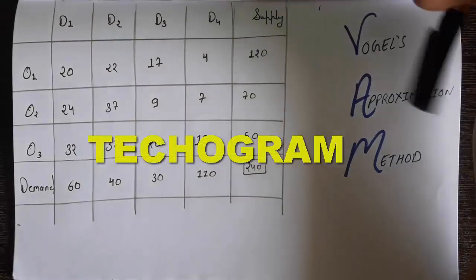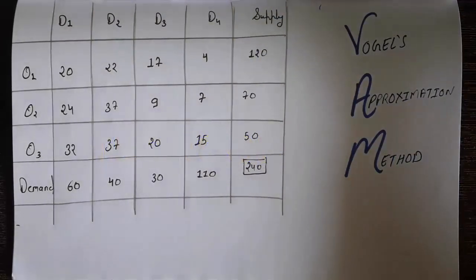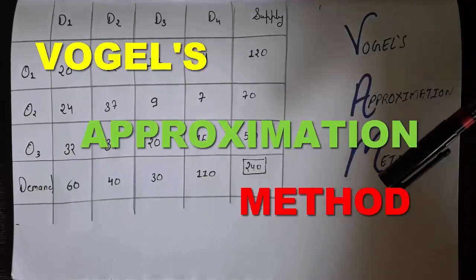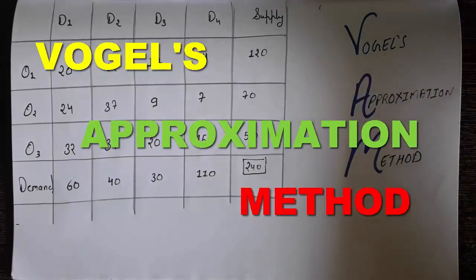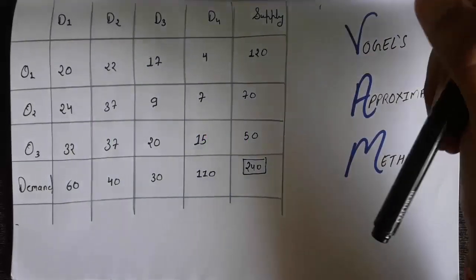Hey guys, welcome back to Techogram. Today we are going to learn the third method of solving the transportation problem, which is Vogel's Approximation Method. We already learned the matrix minima method and the northwest corner method. So let's get started.